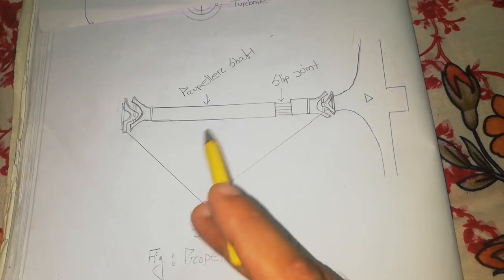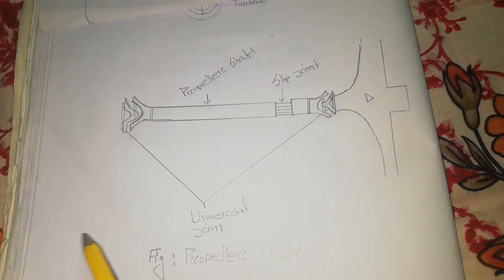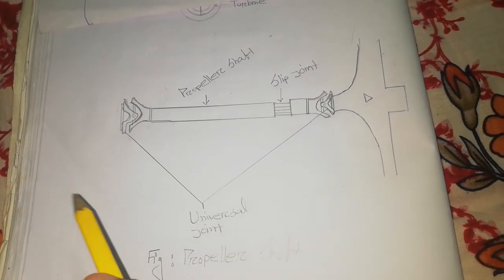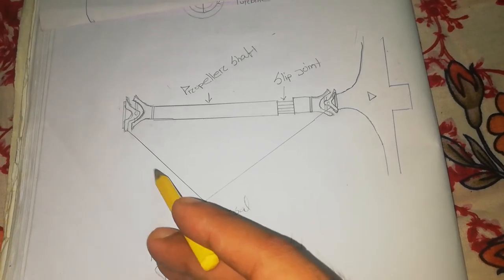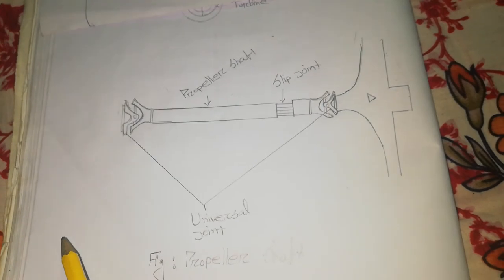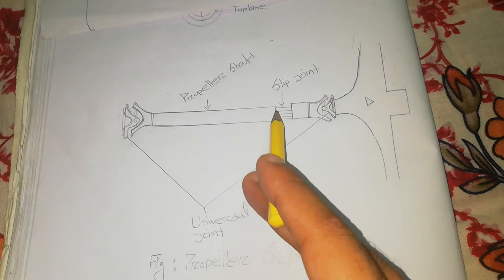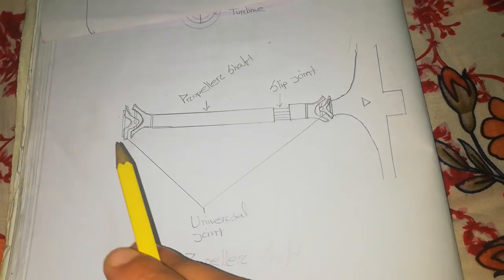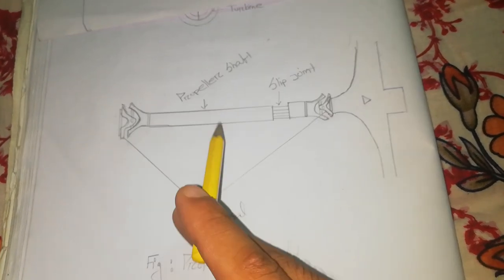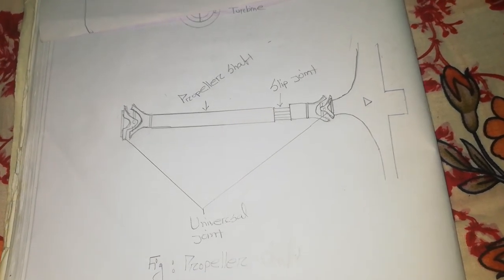We will see how the slip joint works with the propeller shaft. When we are in motion, we can adjust through the slip joints. The slip joints work with the propeller shaft to accommodate length changes.